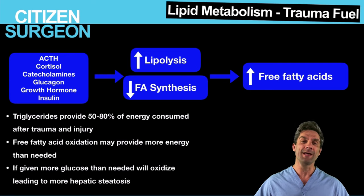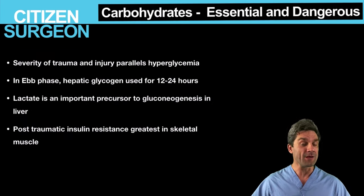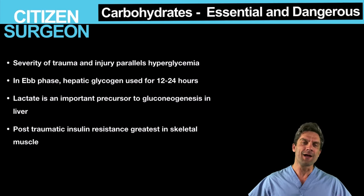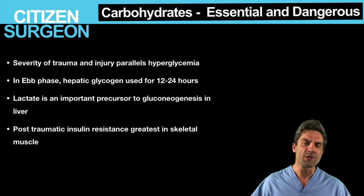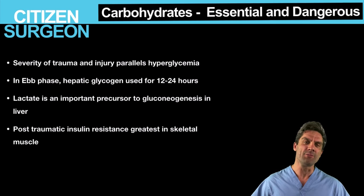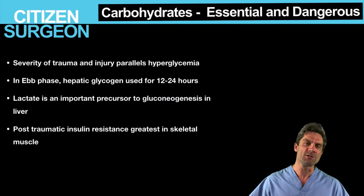The last metabolite to talk about is carbohydrates — these have high utility but can also be dangerous. The carbohydrate most important to us is glucose. The inflammatory and metabolic response to injury is to increase glucose. We are glucose-burning machines during the normal state, but during trauma and injury, this all changes — we become fat-burning machines.